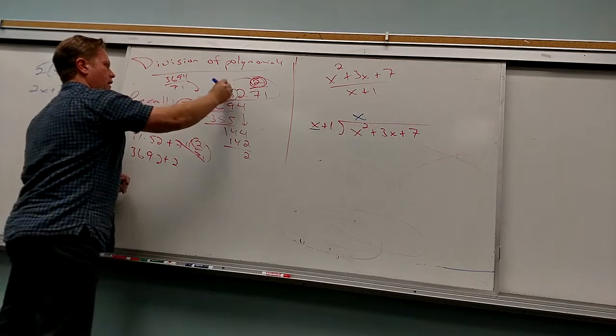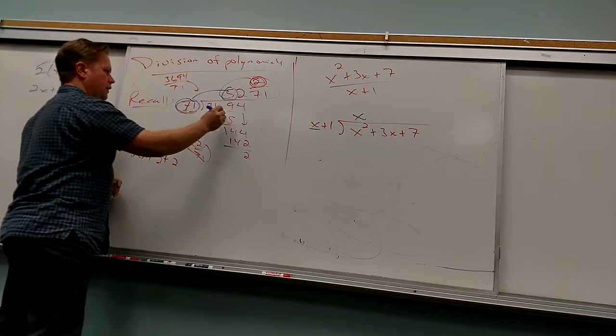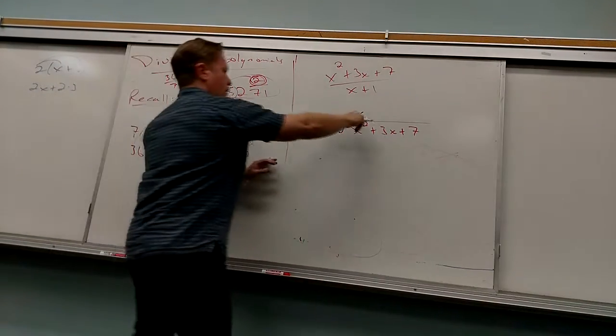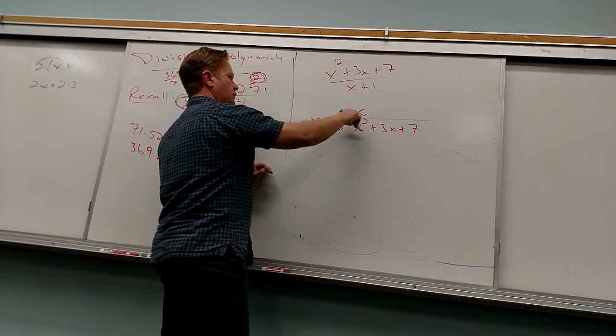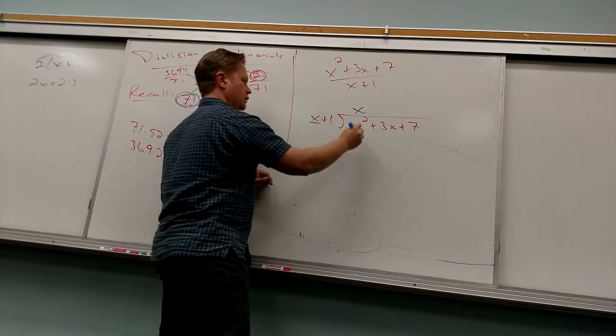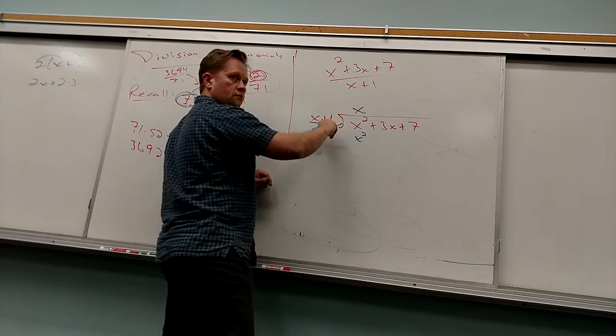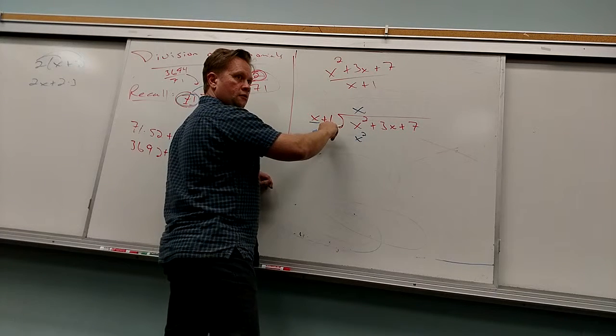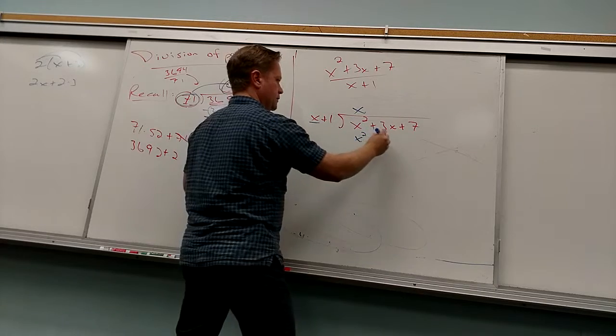And then what do we do next? 5 times 71, and I put the answer here. So, X times X plus 1, I have to distribute X times X. X squared, X times 1, plus X, right?